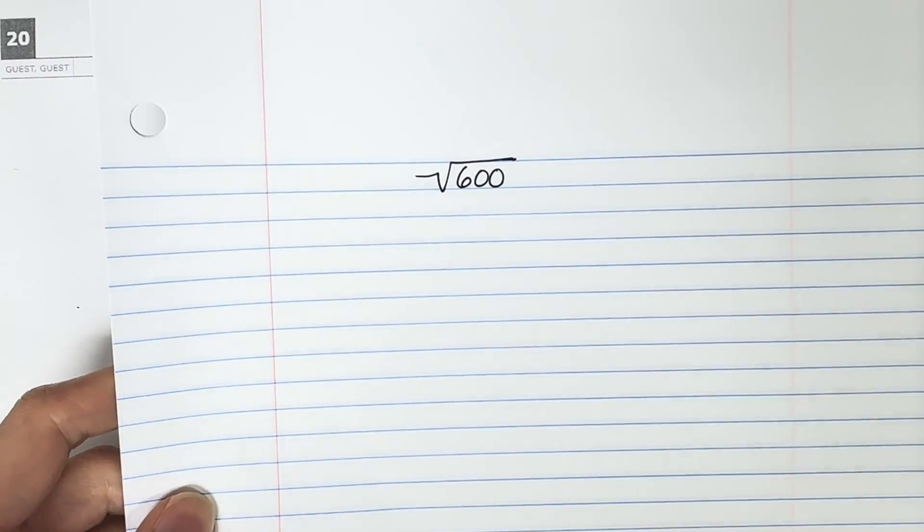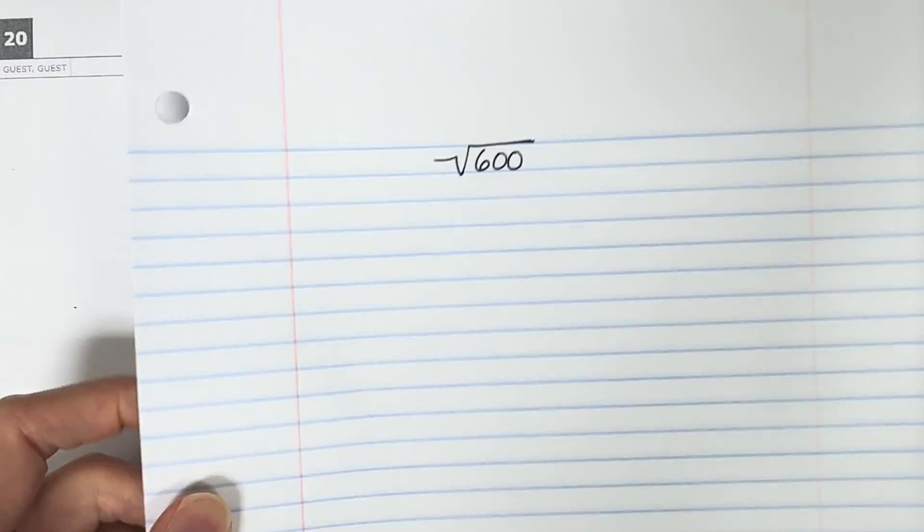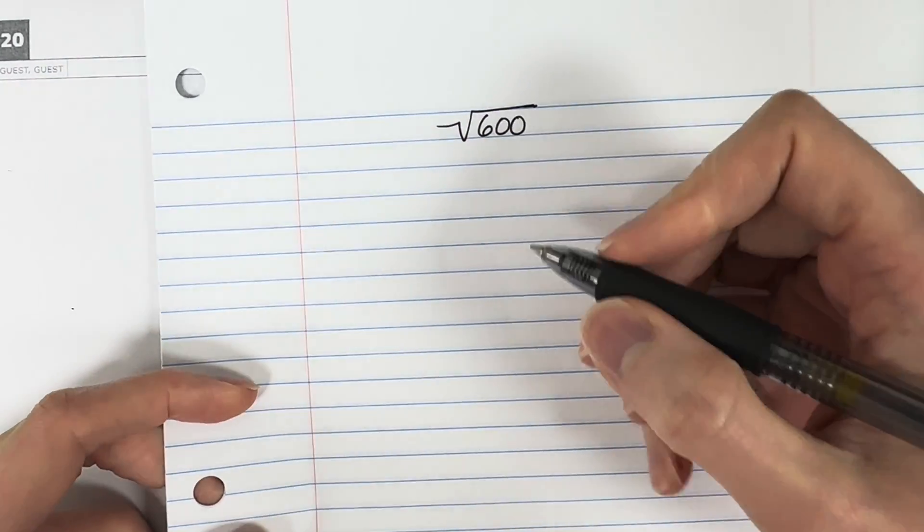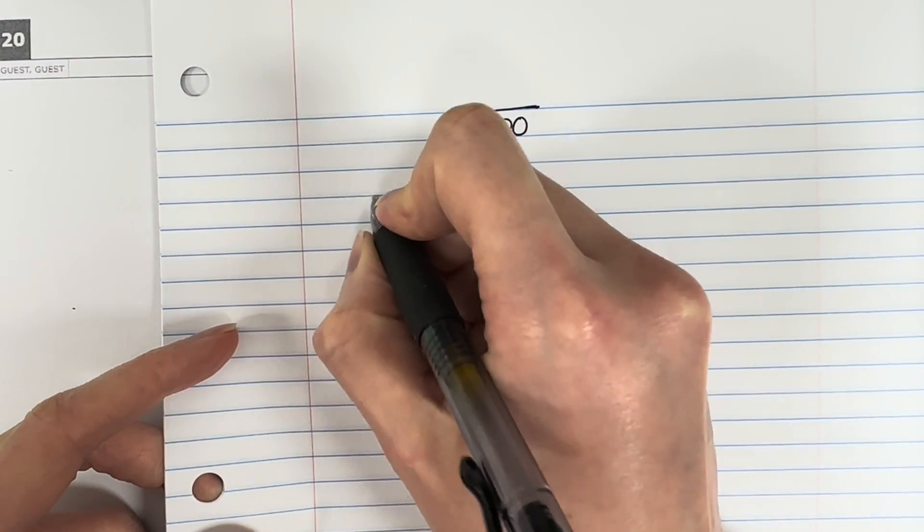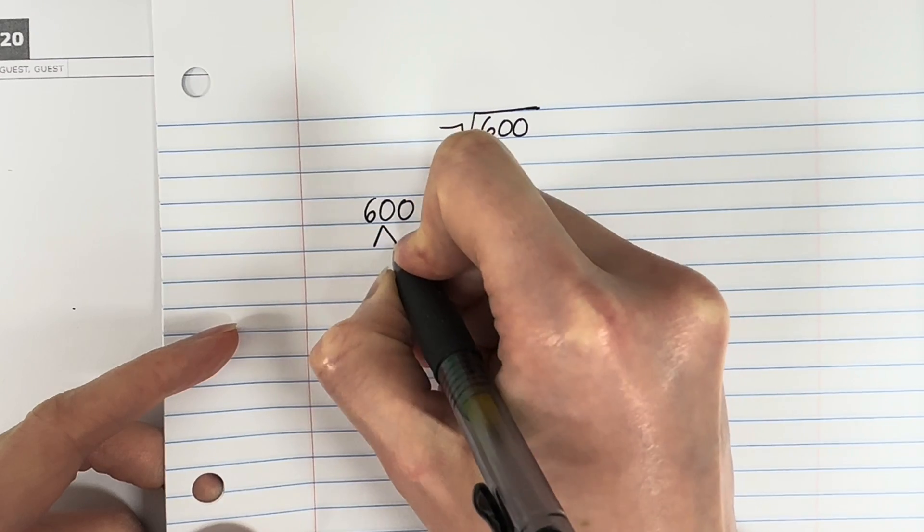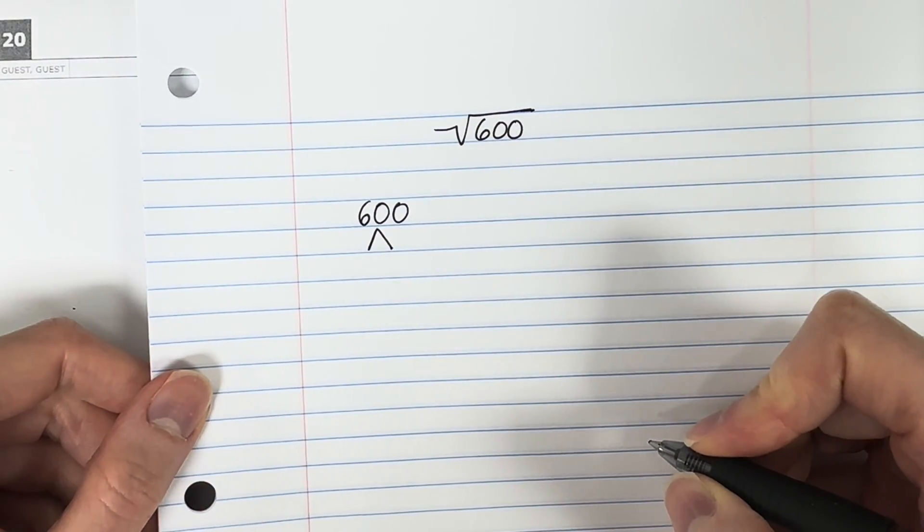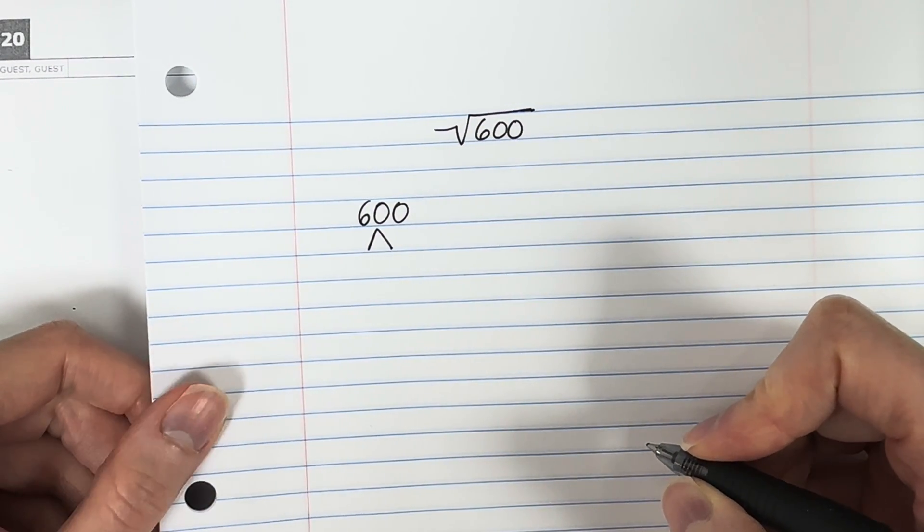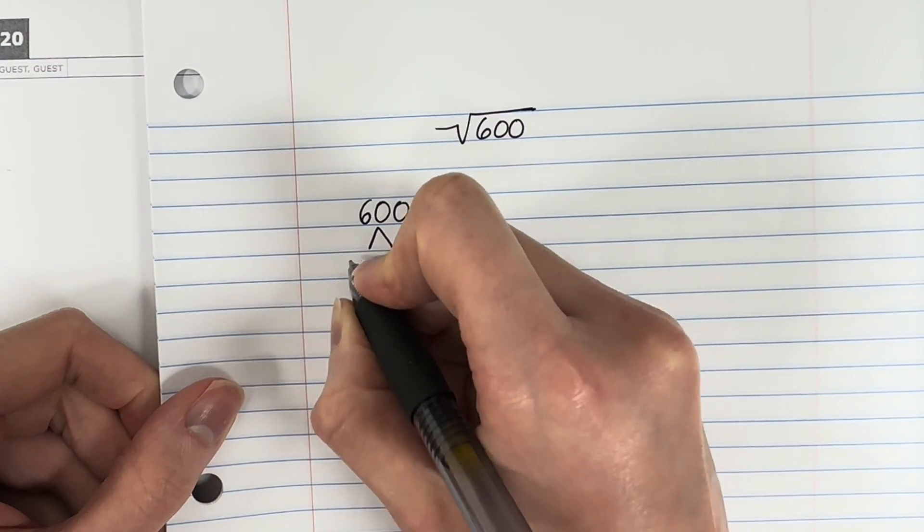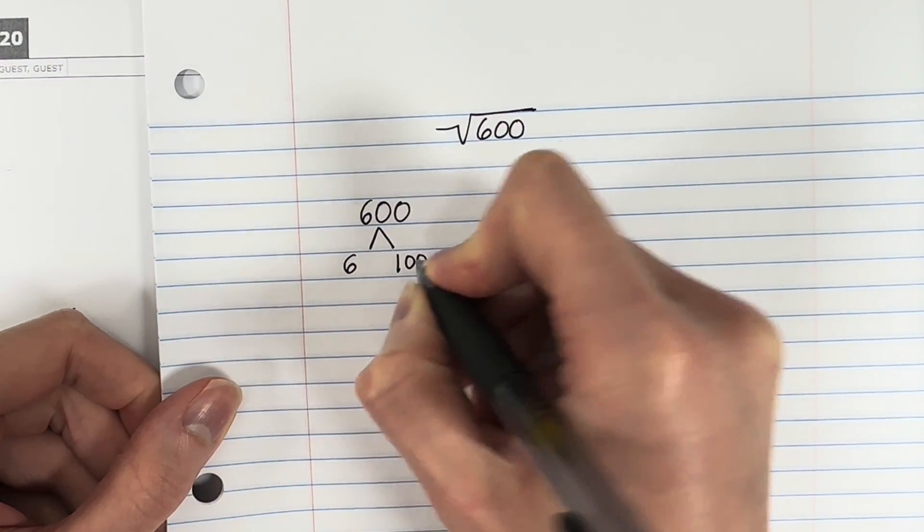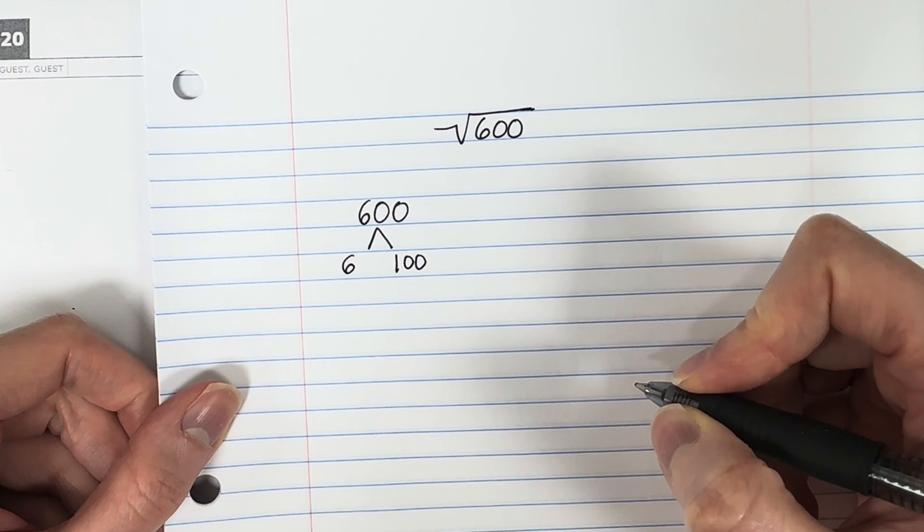I went ahead and copied the square root of 600. And what we're going to do is we are going to make a factor tree for the number 600. So go ahead and write down 600, and we're going to make a factor tree. Which two numbers can I multiply to get 600? You can give me any two numbers. I'm going to go ahead and just do 6 times 100.